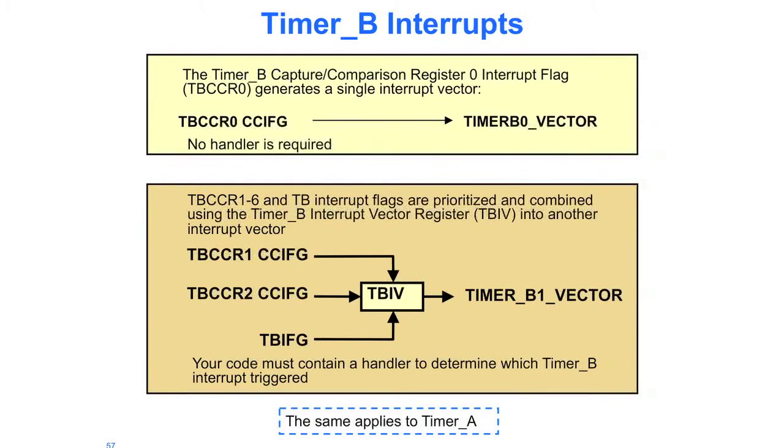This is the timer B1 register. So all those interrupts go into a single mux, come in, interrupt the CPU. Now you're going to have to have some handler code to go out and determine which timer B, or also which timer A interrupt triggered you.